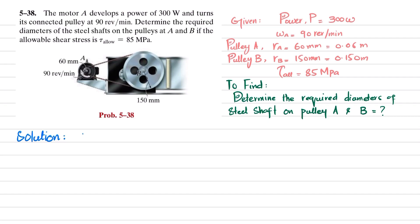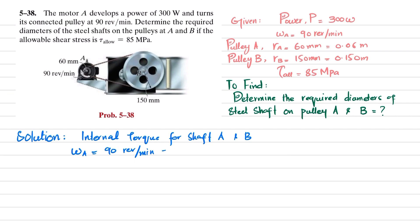First, we will find the internal torques for shafts A and B. Since omega_a is 90 revolutions per minute, we convert it to radians per second: 90 multiplied by 2π divided by 60 seconds, which gives omega_a equal to 3π radians per second.